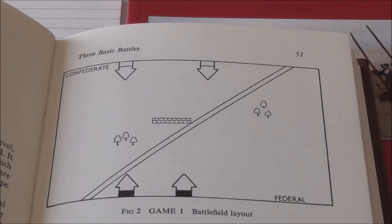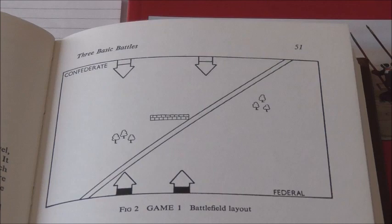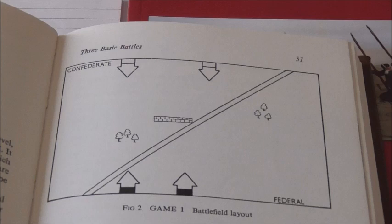He played this game with 1/72nd scale Airfix model soldiers. That's what was available at the time. For a cheap army for anybody interested in wargaming and getting into it cheaply, Airfix 1/72nd was the way to go. You could buy the Union infantry, the Confederate infantry, American Civil War cavalry which you painted as you wanted, and artillery — so you had everything you needed right there in game number one.